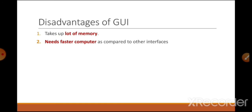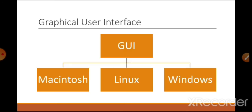The disadvantages of GUI are: since GUI has icons, pictures, pointers, and everything is colorful, it takes a lot of memory to reside in the computer and it needs a faster computer compared to other interfaces. Both of these disadvantages are due to the high-quality graphics, as everything in GUI is in the form of colorful pictures and icons which take more memory and require faster processors.